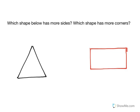Which shape below has more sides? Which shape has more corners? So we're looking for two things. We're first trying to find out which of these two shapes has more sides, and then we're trying to find out which shape has more corners.